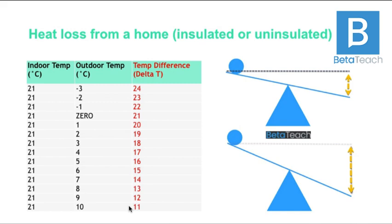This is where we get the idea of low temperature heating. Any home can be heated with low temperatures, because you only have to drive heat into the home to match the speed of heat leaving the home. That leads into the second video, where we'll talk about why the condensing boiler was invented.